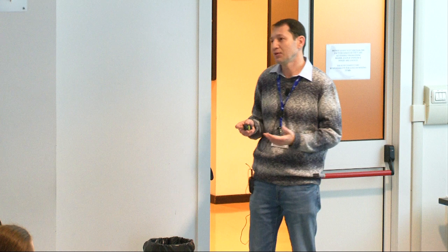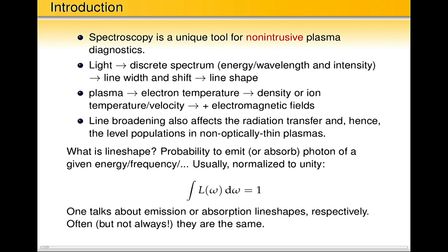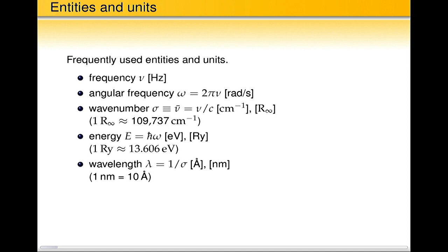So what is a line shape? It tells you what is the probability to emit or to absorb a photon at a given energy or wavelength. Usually one uses a normalized-to-unity line shape. I prefer to use L to designate a normalized, area-normalized line shape. Howard already mentioned yesterday that absorption and emission line shapes are not necessarily the same — that's usually the case but not always. We will not talk about this here because it's a rather advanced topic, but one needs to keep it in mind in general.